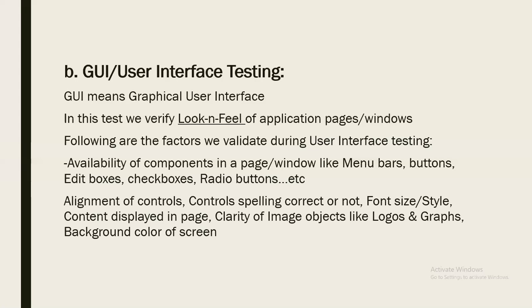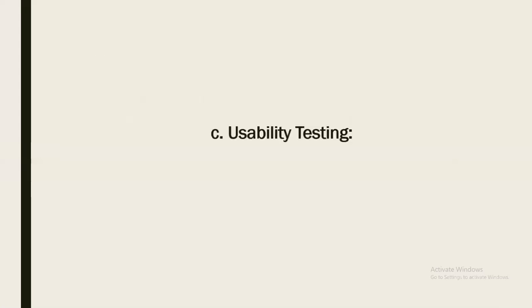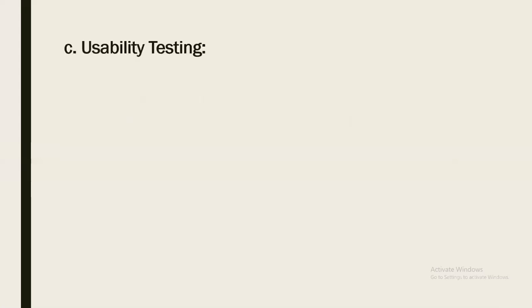For a simple example, consider a pen. Verifying the shape of the pen and the color of the pen — these things come under user interface appearance. That is the first type of testing. The second one is usability testing.